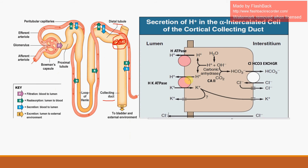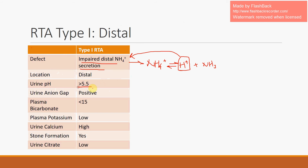The central hallmark of type 1 RTA is a defect in the H+K+ATPase. Normally, this H+K+ATPase serves to shunt the proton out of the alpha intercalated cell and into the lumen, acidifying the urine. In the process, potassium is reabsorbed. But when this pump is broken, potassium cannot be reabsorbed and the proton is unable to be excreted — it builds up in the body and doesn't end up in the urine. Because the proton doesn't reach the urine, the urine pH is greater than 5.5. Additionally, plasma potassium will be low because it cannot be reabsorbed.